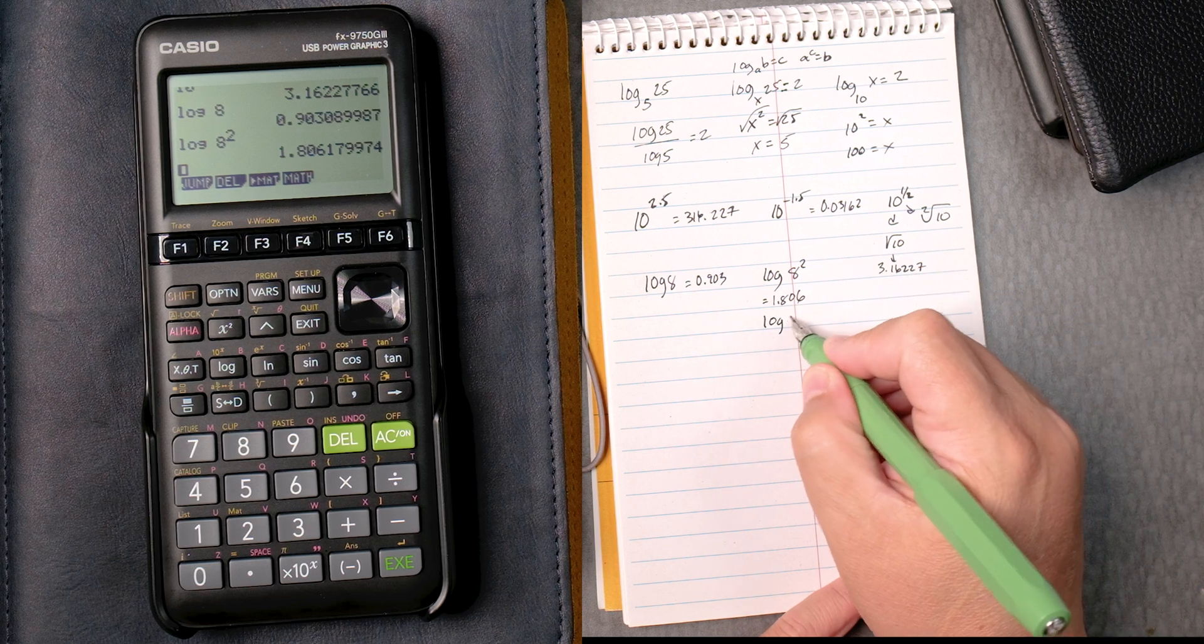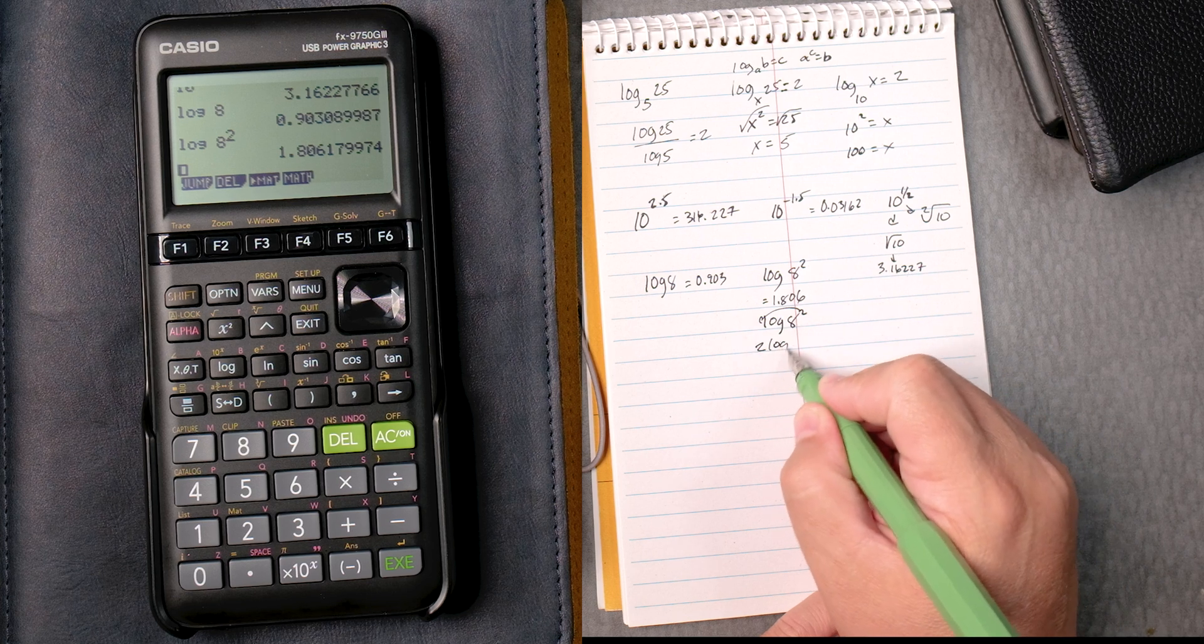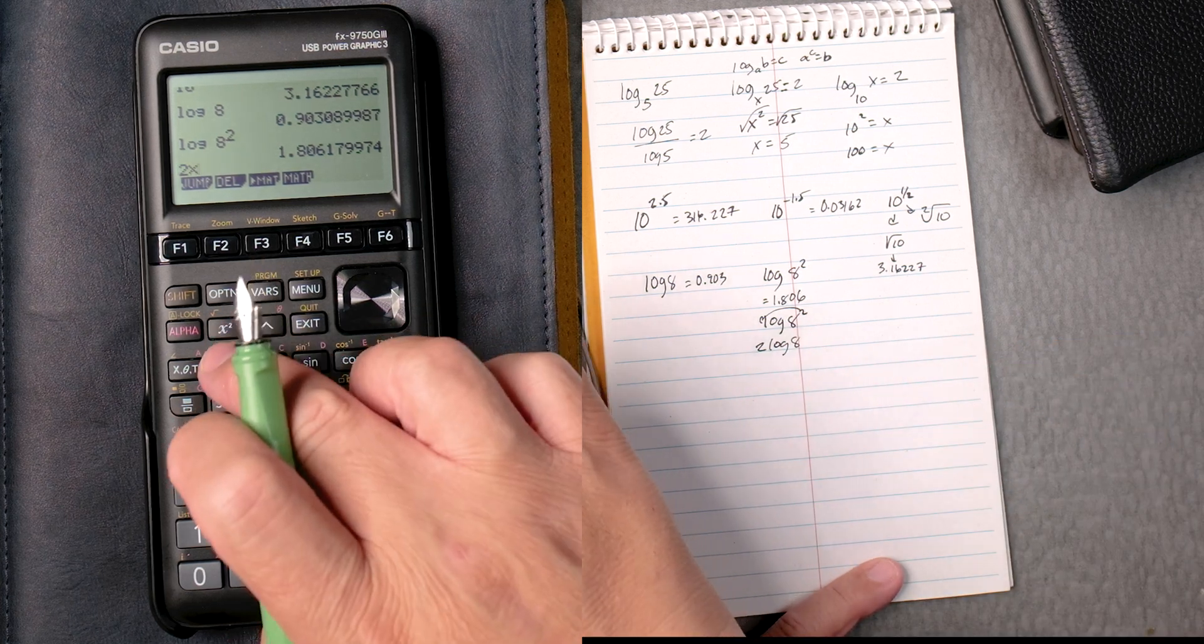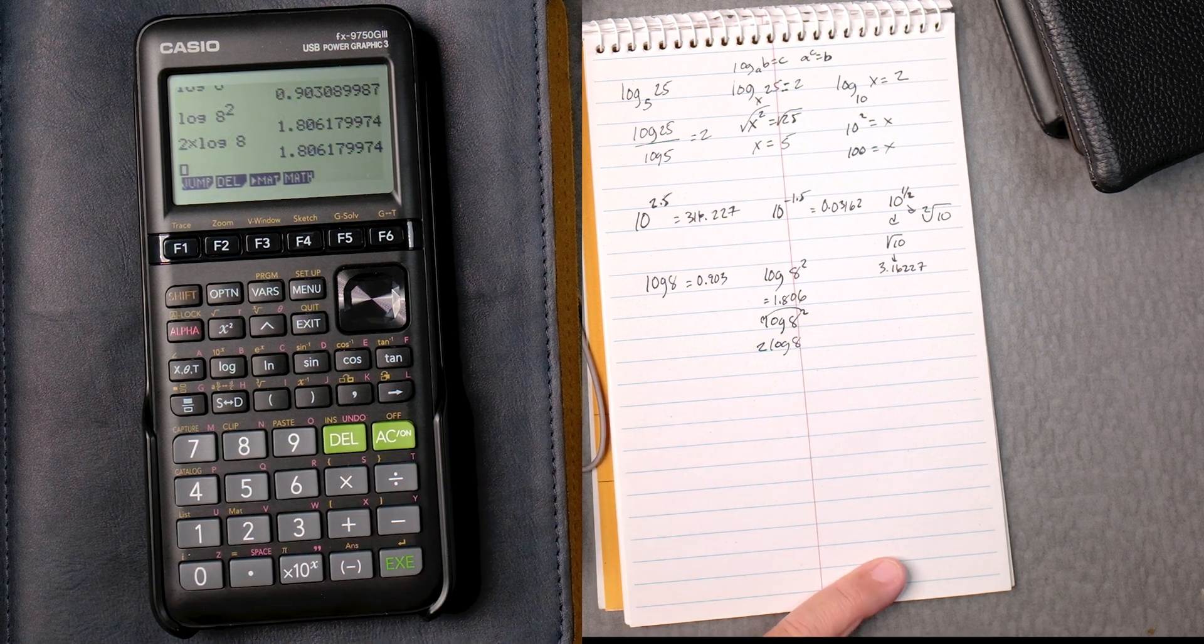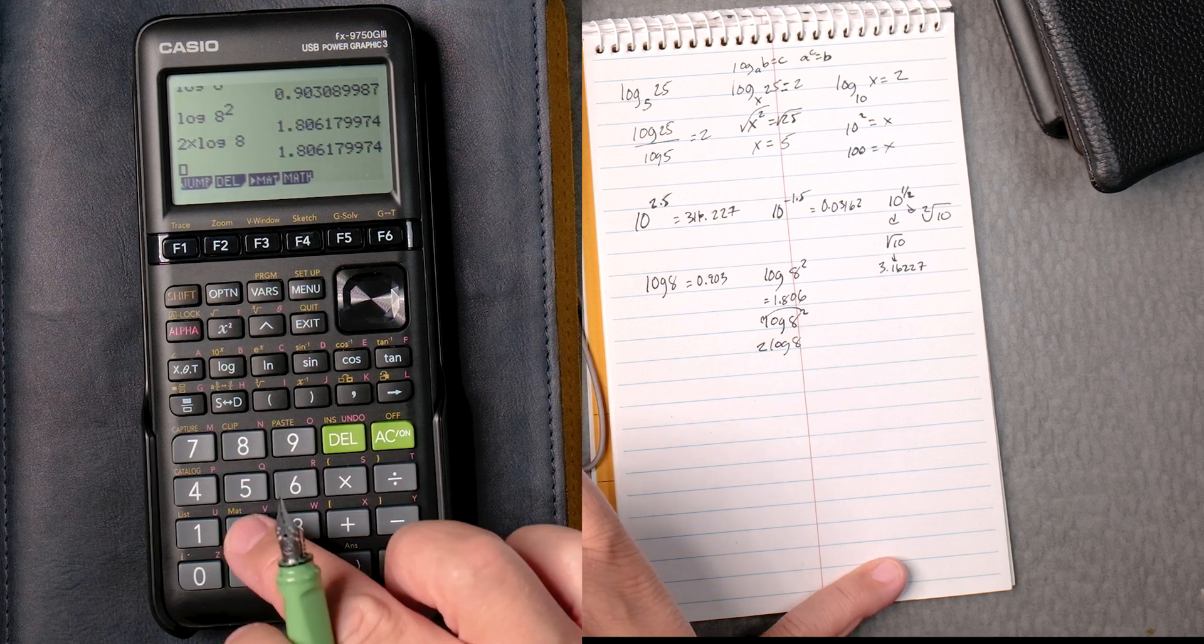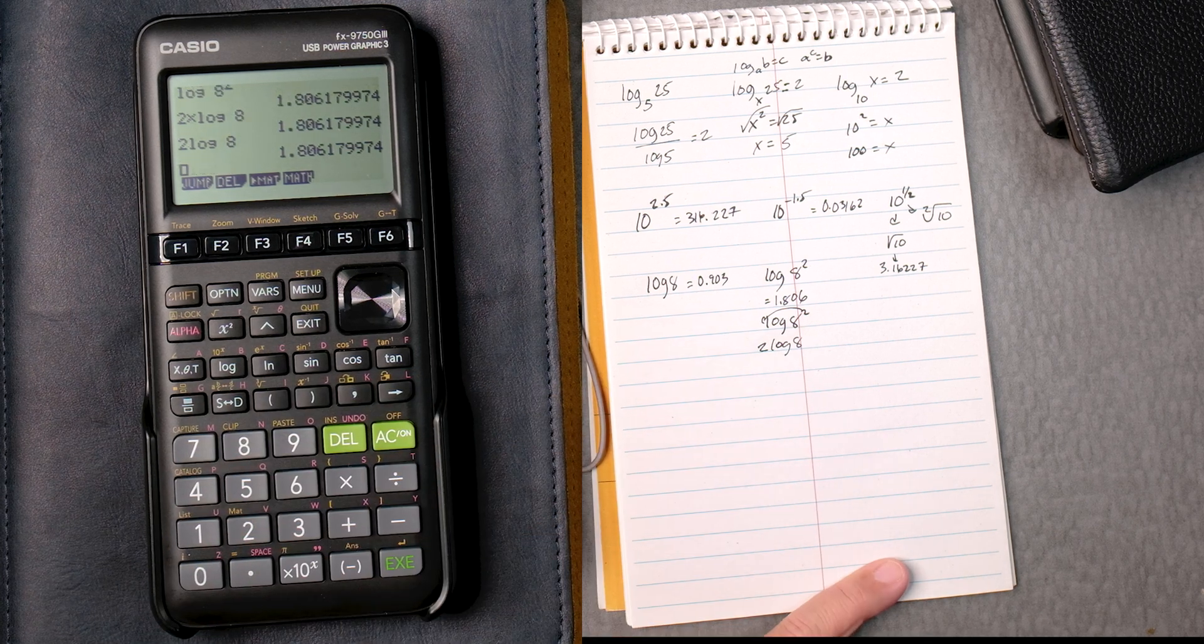The log of 8 squared, this 2 could go down. So that's 2 log 8, so that's 2 times log 8, execute. Do I have to use the multiplication symbol? Let's find out. No.